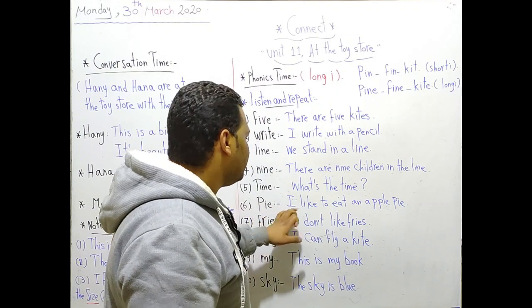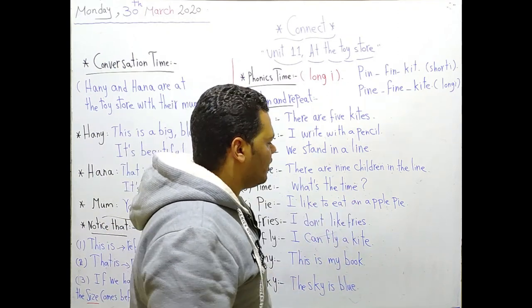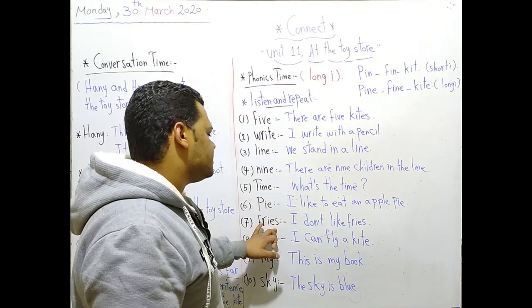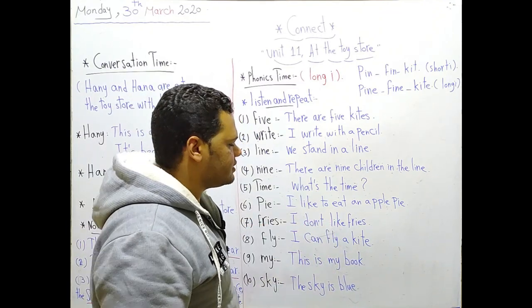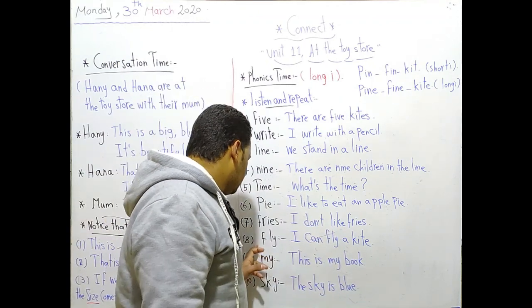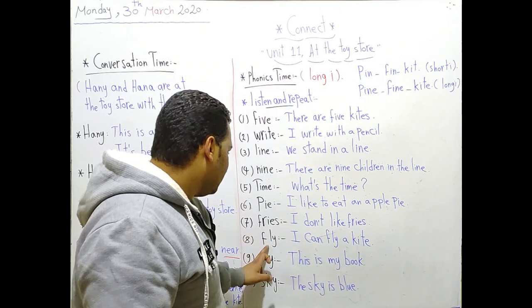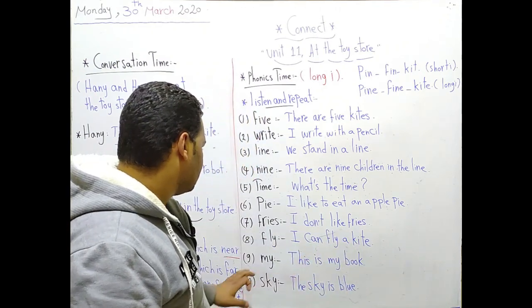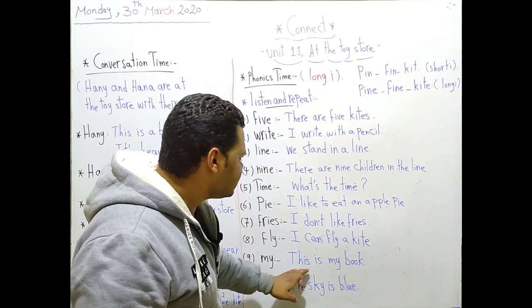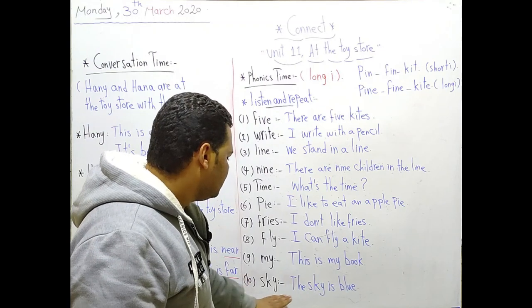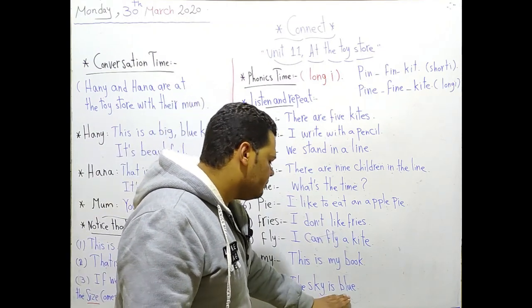Number six: pie. I like to eat an apple pie, it's yummy. Number seven: fries. I don't like fries, it's unhealthy food. Number eight: fly. I can fly a kite. Number nine: my. This is my book. Number ten: sky. The sky is blue.